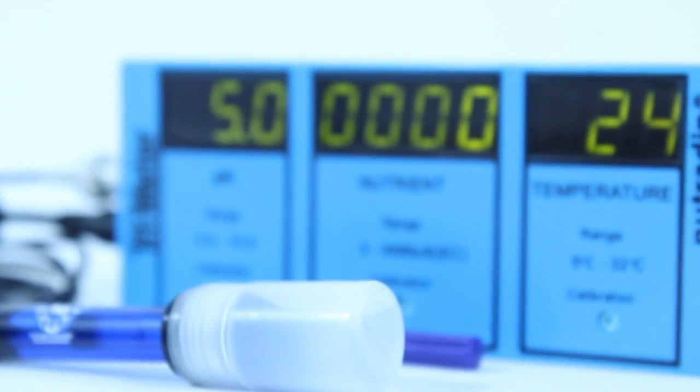With a large digital readout, the Trimeter can be easily read from a distance, whether your grow lights are on or off.